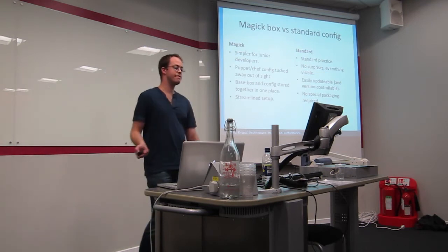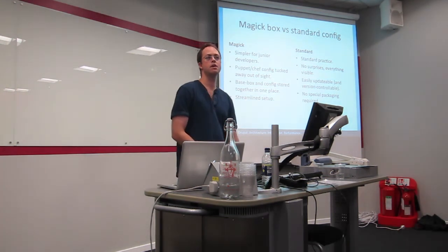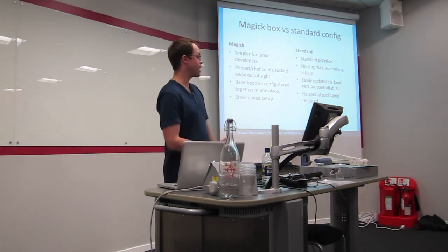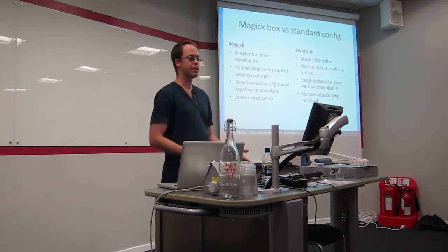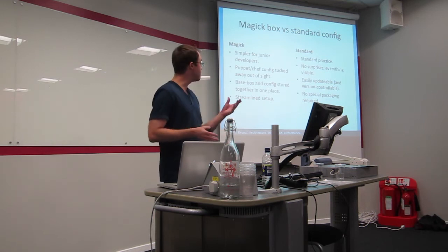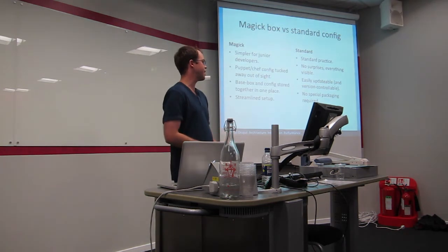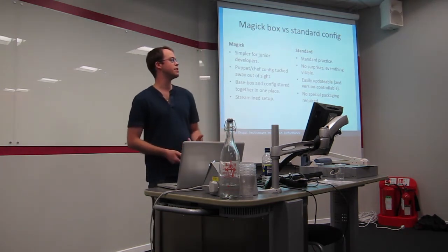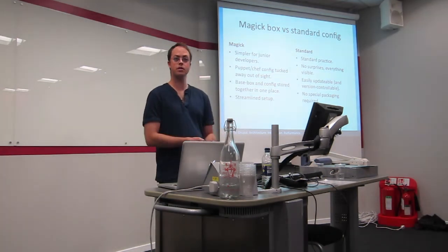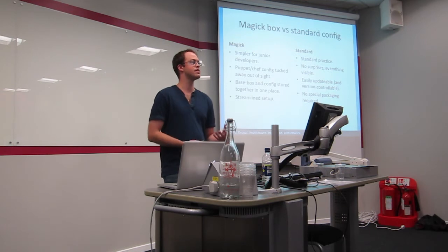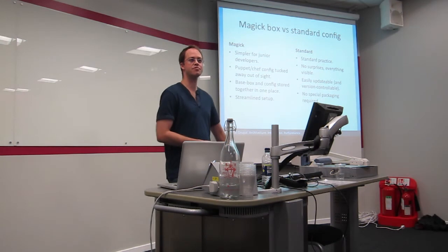If you use a standard Vagrant config, it's simple to see. Everyone can see it. Everyone does things that way. So you can have it under git. You can diff changes. You don't need any special packaging. If you do this magic packaging system, then it means that it's a little bit quicker to get set up and it means that if you're working with junior developers, then you hide all of the magic out of the way. So it means it's a very simple file structure and it also means that it's something that's very hard to break because you can only edit it by editing a hidden directory in your home directory.